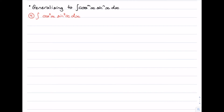In this video we'll be learning how to generalize what we learned in the previous video, where we looked at integrating odd and even powers of sine or cosine. In this video we're learning about integrating products of any powers of cosine — it could be cosine to an odd power times sine to an odd power, cosine to an even power times sine to an odd power, and so on. Any combination of those.